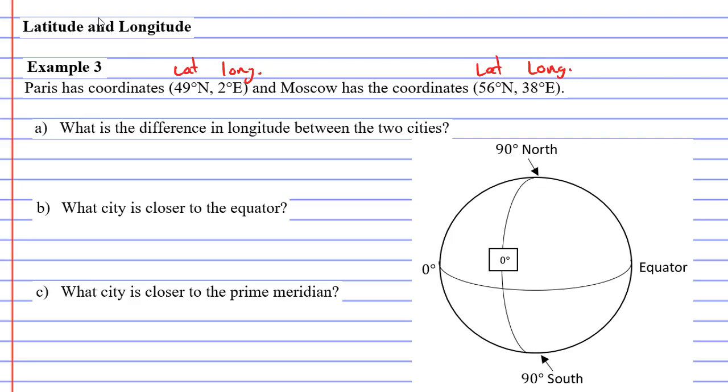Alright, now 49 degrees north. We've got our equator, which is 0 degrees, and we've gone north or up 49 degrees. So we'll draw this kind of a curved line, roughly, where we think Paris is going to be, 49 degrees north.